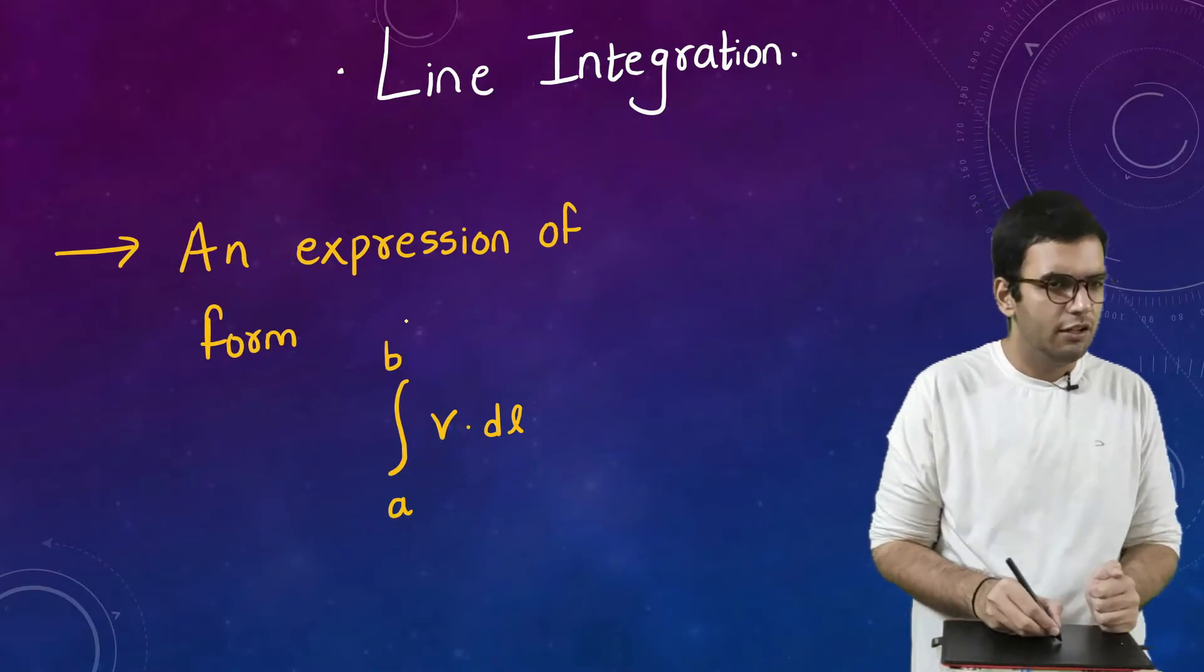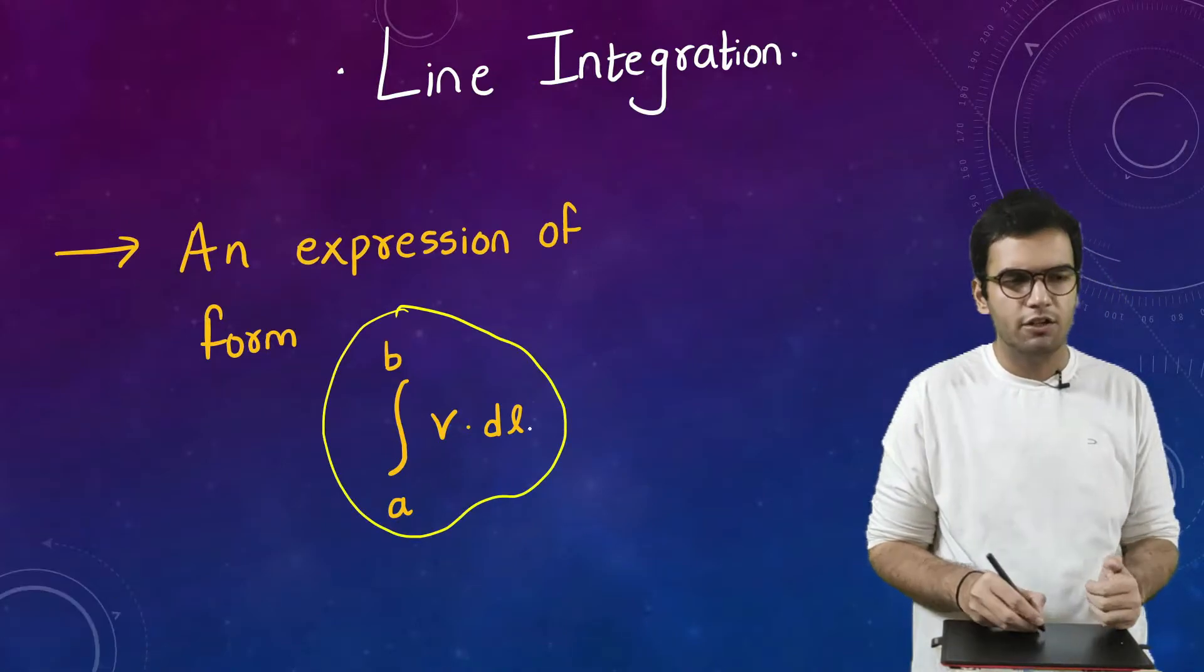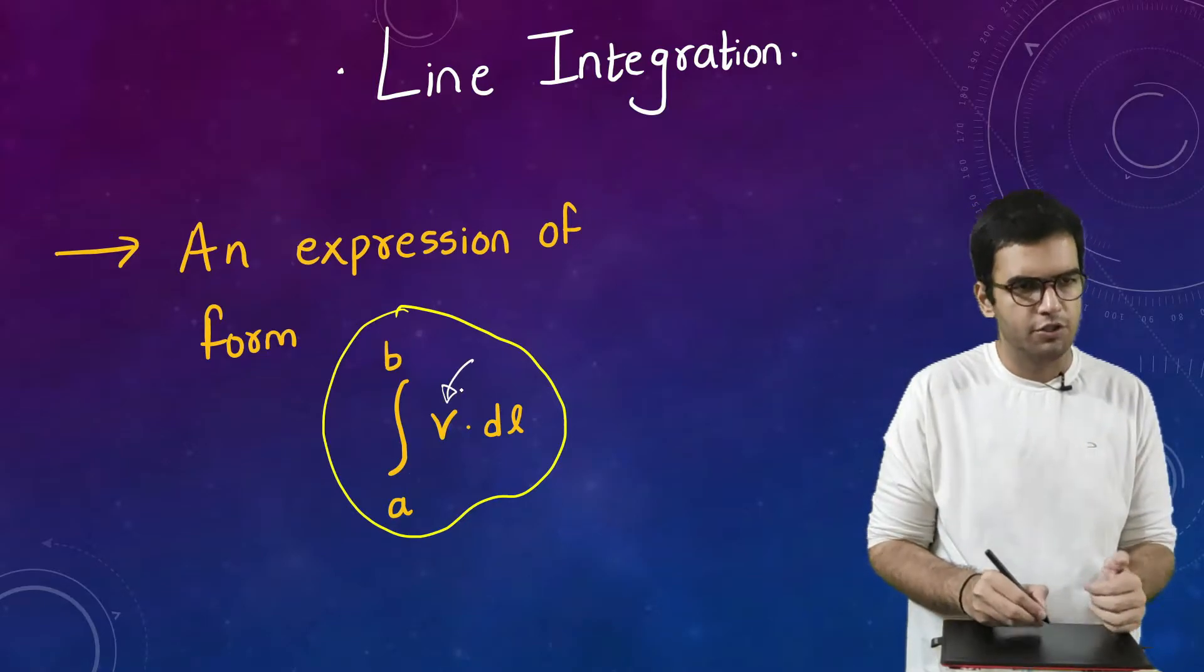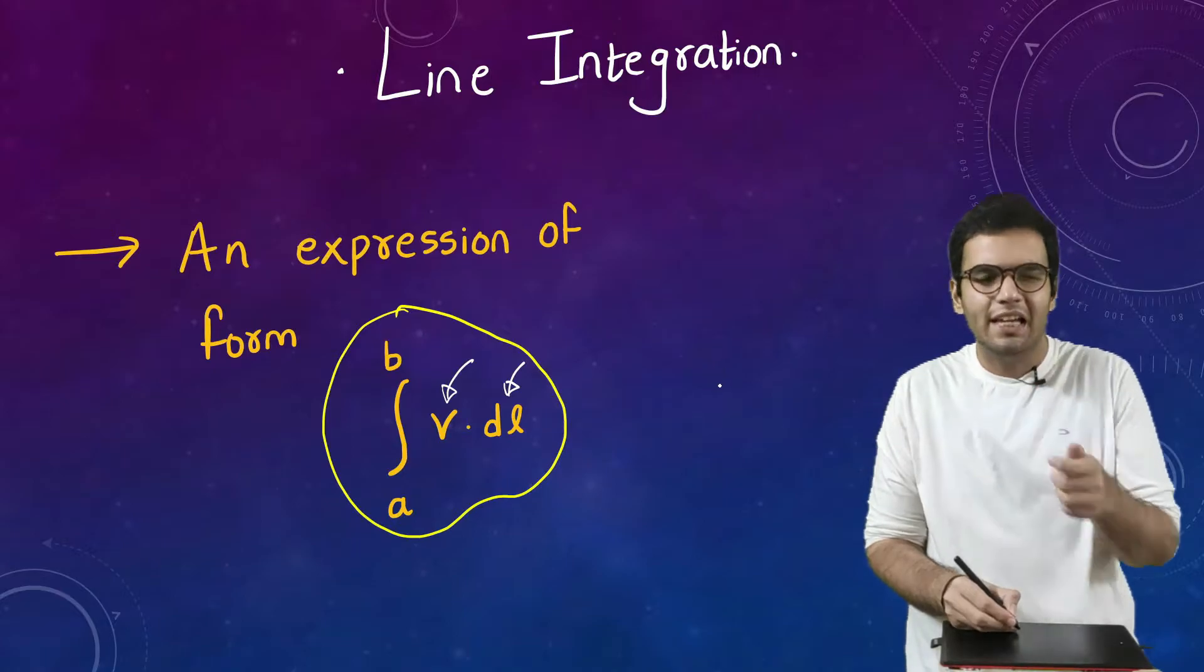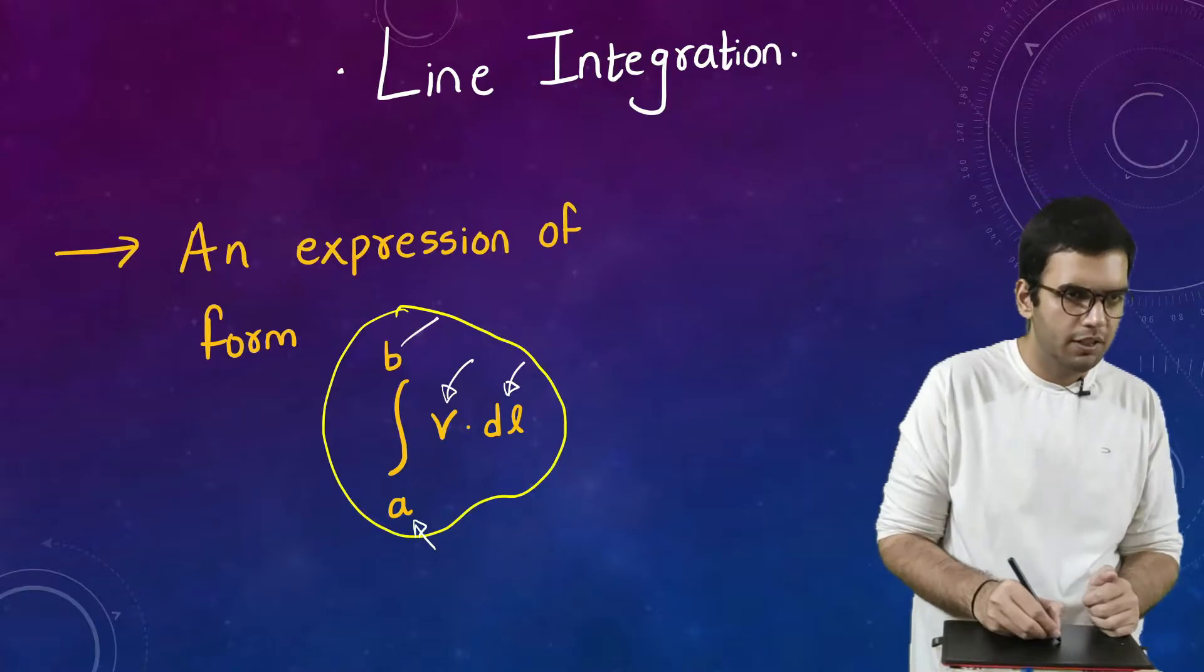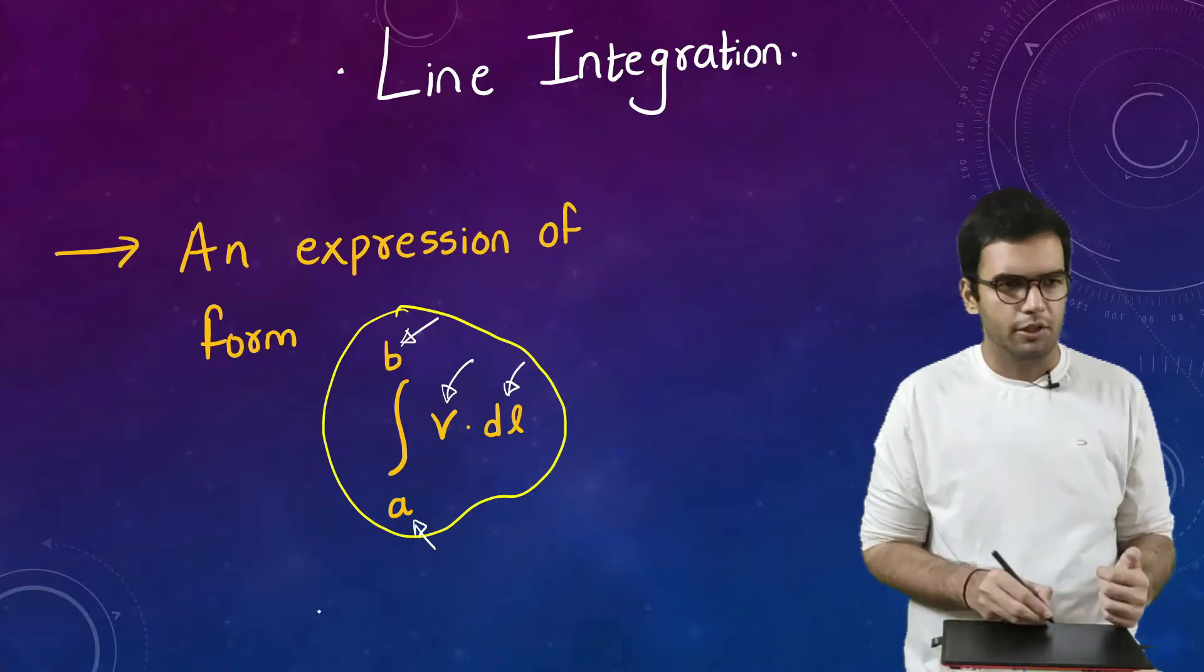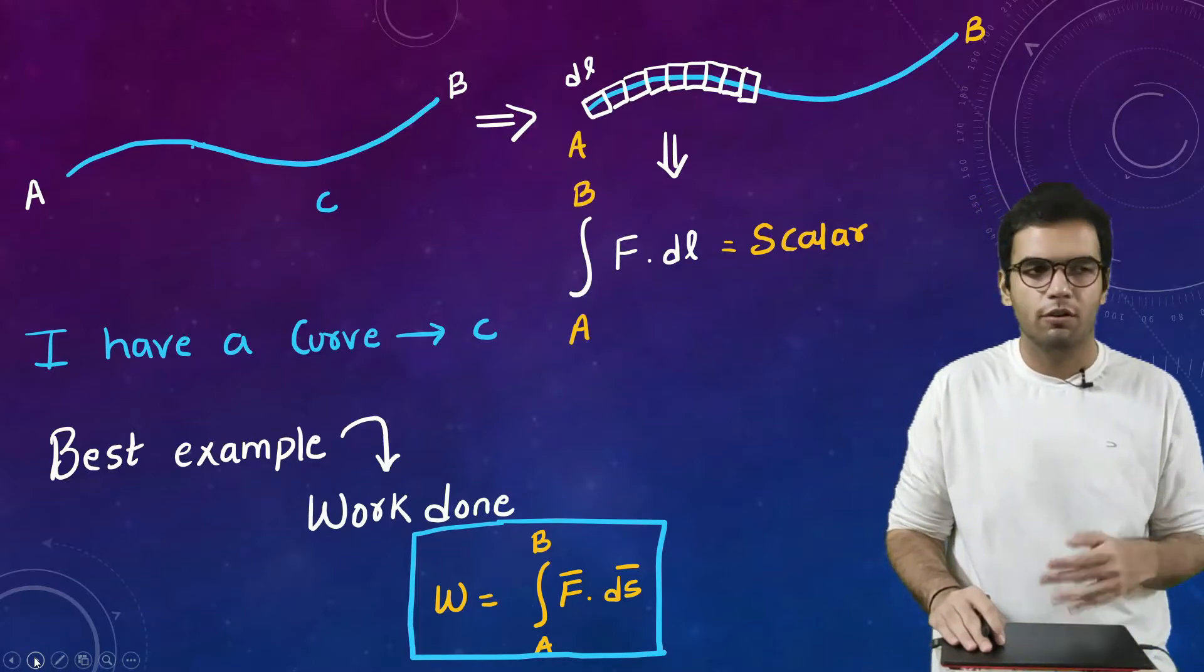So basically line integration is an expression of this form. This is the form of line integration where we have a function which can be anything. We have a position vector or a position element which I will define later on. We have a simple integration with an initial limit and the final limit. So that's not much, let's go into some detail.